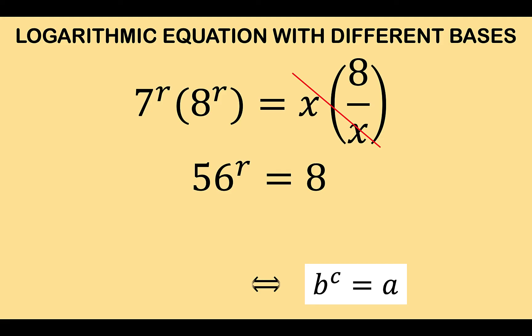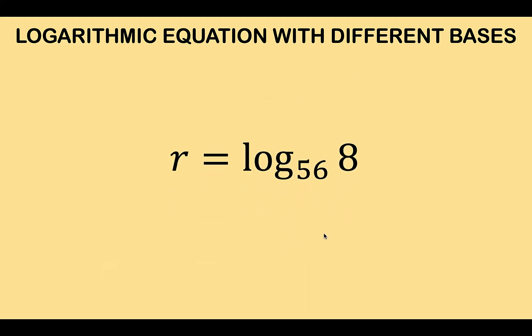So the left side becomes 56 raised to r and the right side is simplified as 8. And we can now solve this for r using again this conversion from exponential to logarithmic. So r is equal to the logarithm to the base 56 of 8. So this is now a constant number and that is the value of r.